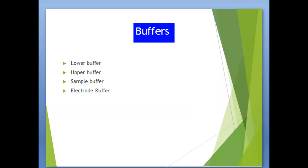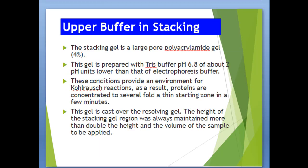Regarding buffers used in electrophoresis: the stacking gel is a large-pore polyacrylamide gel. This gel is prepared with Tris buffer at pH 6.8, about 2 pH units lower than that of the electrophoresis buffer. These conditions provide an environment for Kohlrausch reactions, and as a result, proteins are concentrated several-fold into a thin starting zone in a few minutes.